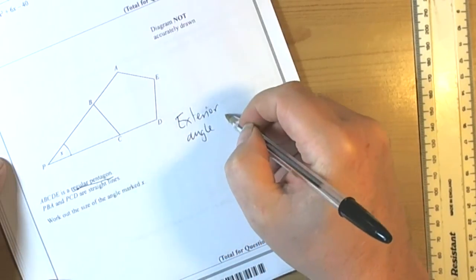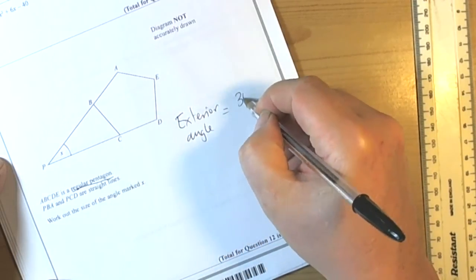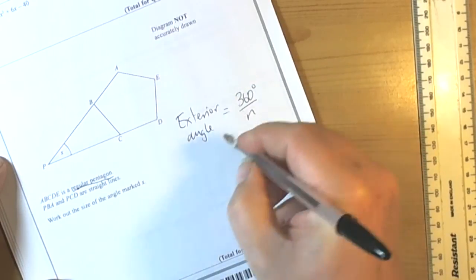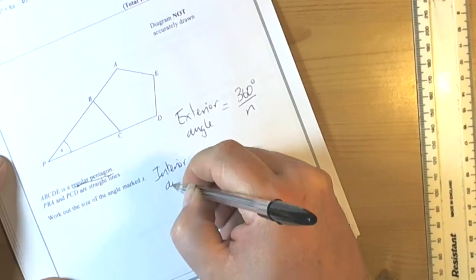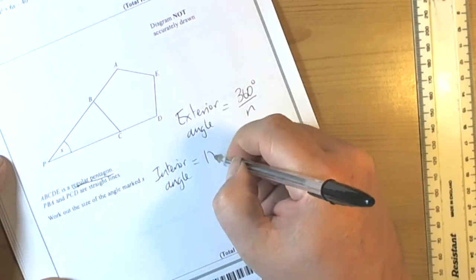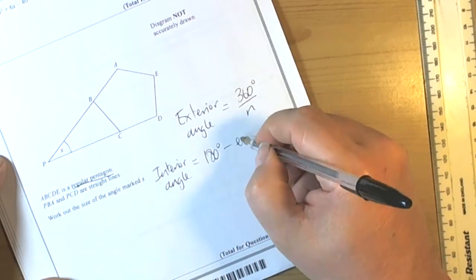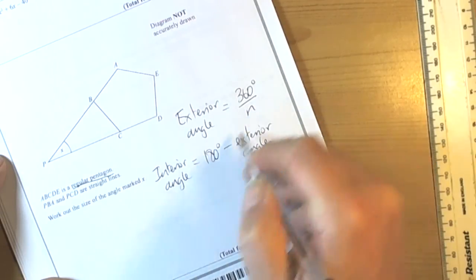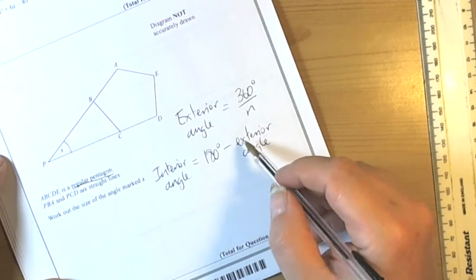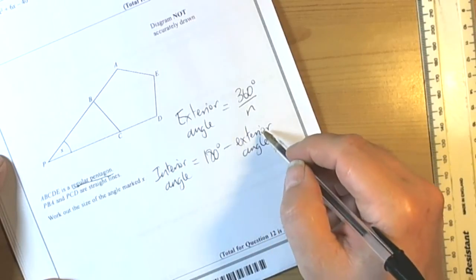The exterior angle of a polygon is equal to 360 degrees divided by n, and the interior angle is equal to 180 degrees minus the exterior angle. So these might be useful to us, particularly to talk about polygons, so let's write those down to give us an idea of what's going on.